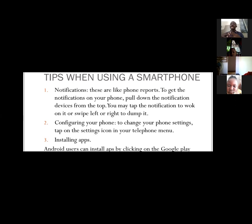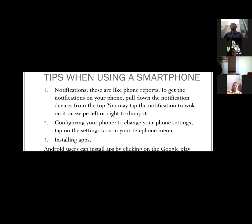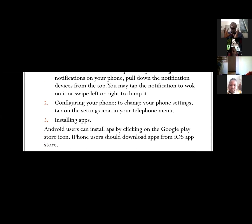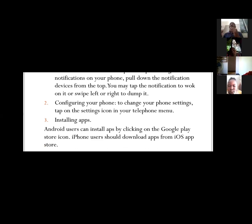You may tap the notifications. If the notification is important, you tap on it and it will appear, and you'll be able to work on it. Or you may swipe left or right if you don't need it and just want to dismiss it. So that's about notifications — notifications are reports. When you see a smartphone, you can sort out messages, WhatsApp, Instagram, and all those notifications. That's the first thing.